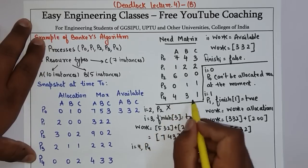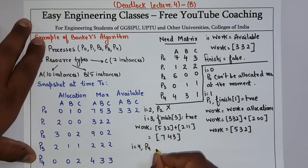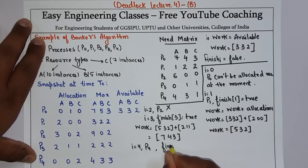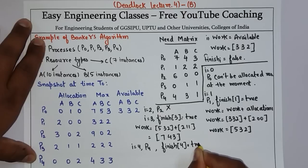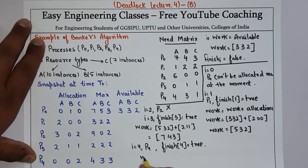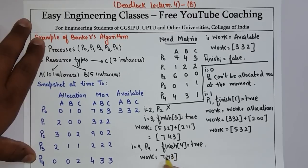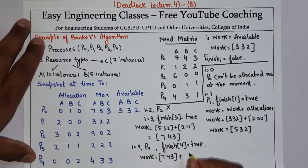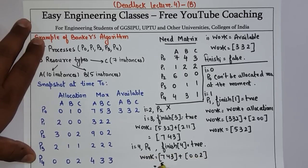Then check i=4, P4: P4 needs 4, 3, 1 and we have 7, 4, 3 — so it can also proceed. Finish[4] is set to true. The new Work will be 7, 4, 3 plus Allocation of P4, which is 0, 0, 2. So Work becomes 7, 4, and 5.